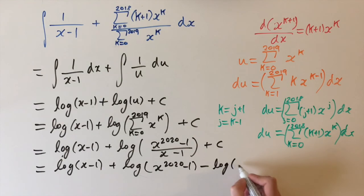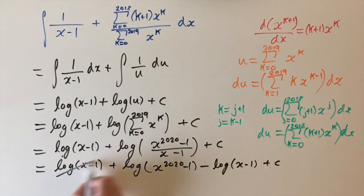x to the 2020 minus 1 minus log of the denominator of the bottom term. So minus log of x minus 1 plus c. And this cancels with the first term, which is really nice. So our answer is, if I've got enough space, I'll just squeeze it in. The solution is log of x to the 2020 minus 1 plus c. And that's the answer.